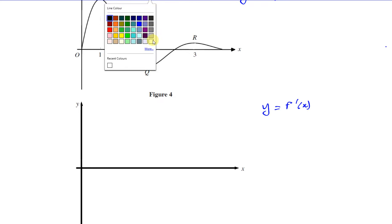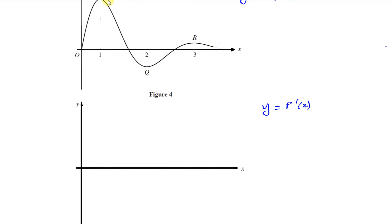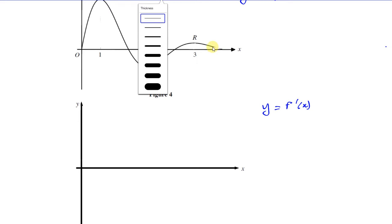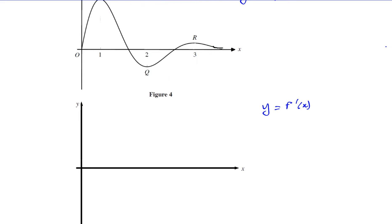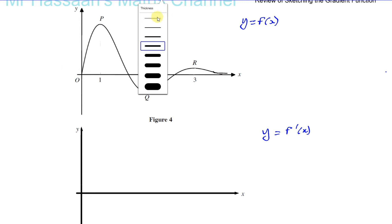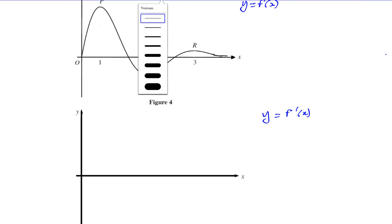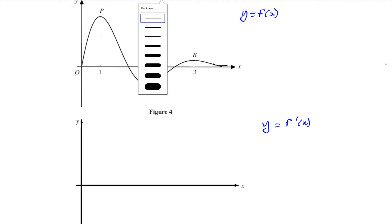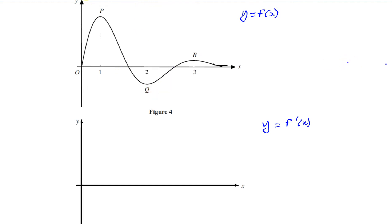I should have done this before I started — I just thought about it. So, this is now an asymptote. We're going to draw the gradient function on the graph below for this particular curve. The important things to look out for when doing gradient function sketching are the places where some major changes take place.